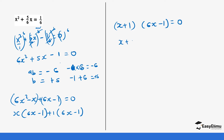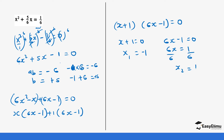From (x plus 1)(6x minus 1) equals zero: the first factor gives x plus 1 equals zero, so x₁ equals negative 1. The second factor gives 6x minus 1 equals zero, so 6x equals 1, and dividing both sides by 6, x₂ equals 1 over 6.